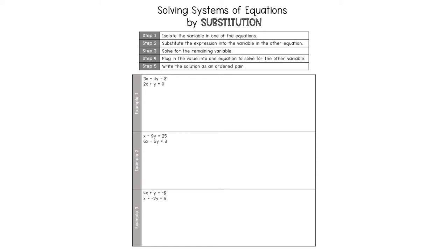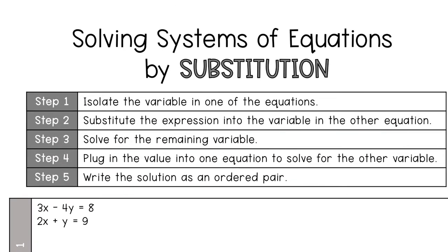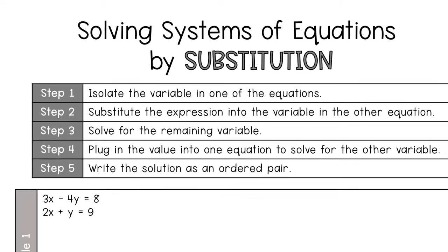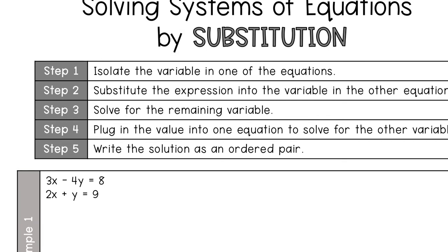Let's look at the top. I wrote out all of the steps you're going to need when solving by substitution. Step one is to isolate the variable in one of the equations — isolate means to get it all by itself. Step two is to substitute the expression into the variable of the other equation. Then solve for the remaining variable, plug in the value to find the other variable, and write the solution as an ordered pair.